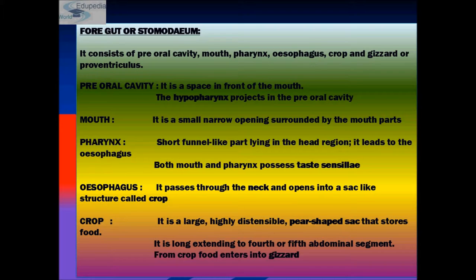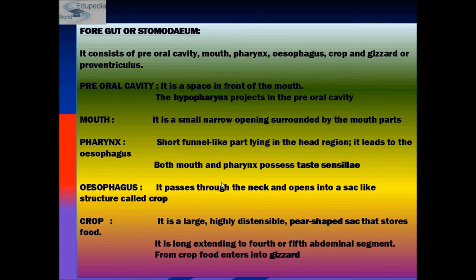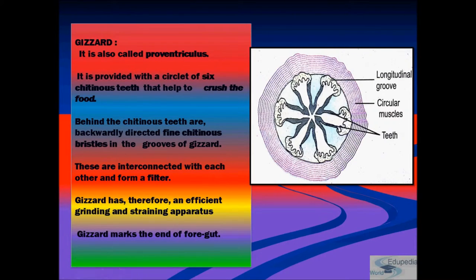The crop extends to the fourth to fifth abdominal segments. From the crop, food enters the gizzard, which is also known as the proventriculus. It is provided with a circle of six chitinous teeth which help to crush the food.